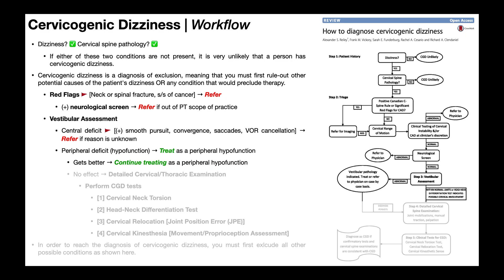There's always a chance that the vestibulo-ocular motor screen suggests a peripheral deficit — maybe a positive head thrust test — and you treat as a peripheral hypofunction, but the patient makes no gains. You've also done the Dix-Hallpike test and the horizontal roll test, and there's no evidence of BPPV, no evidence of central dysfunction, no evidence of peripheral hypofunction. In that case, you move on and assume it's not the vestibular system.